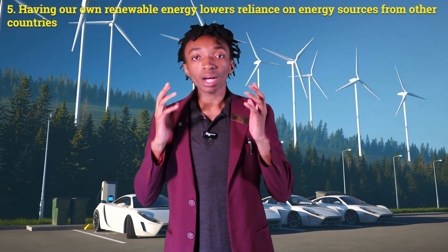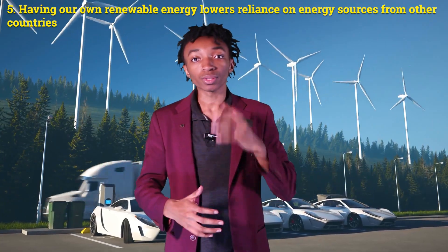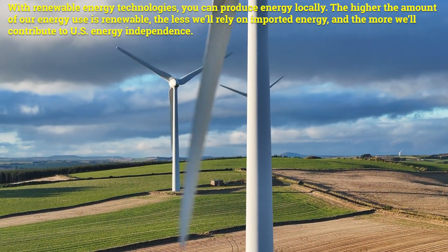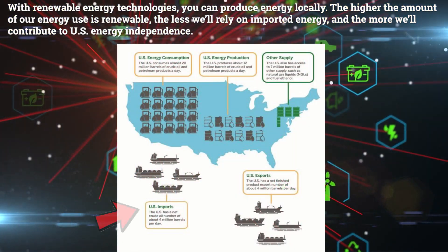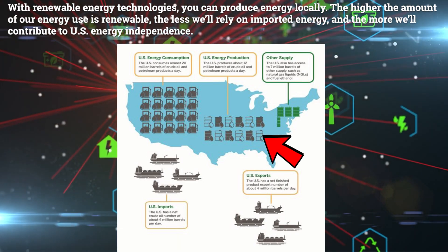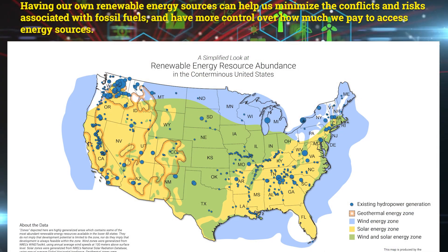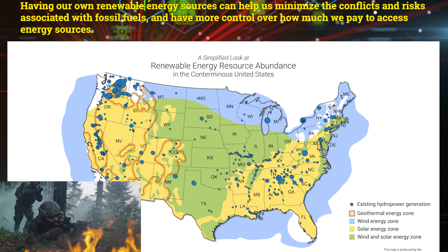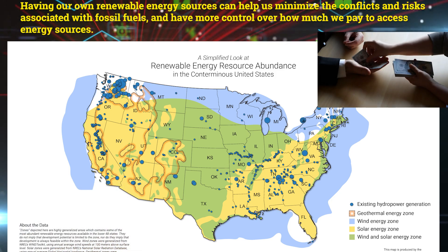Number five: having our own renewable energy lowers reliance on energy sources from other countries. With renewable energy technologies, you can produce energy locally. The higher the amount of our energy use that is renewable, the less we rely on imported energy and the more we contribute to US energy independence. Having our own renewable energy sources can help us minimize the conflicts and risks associated with fossil fuels, and have more control over how much we pay to access energy.